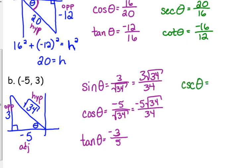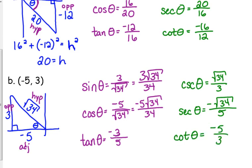Reciprocals. Cosecant. Square root of 34 over 3. Secant. Negative square root of 34 over 5. Cotangent. Negative 5 over 3.